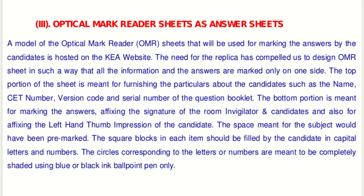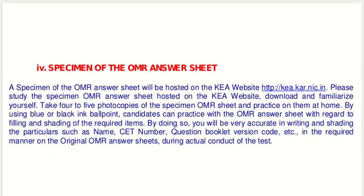On the top of the OMR sheet, candidates should fill in information such as name, CET number, version code, and serial number of the question booklet. A specimen of the OMR answer sheet will be hosted on the KEA website. Students can download and familiarize themselves with it — take four to five copies and practice at home so shading becomes accurate before the actual CET examination.